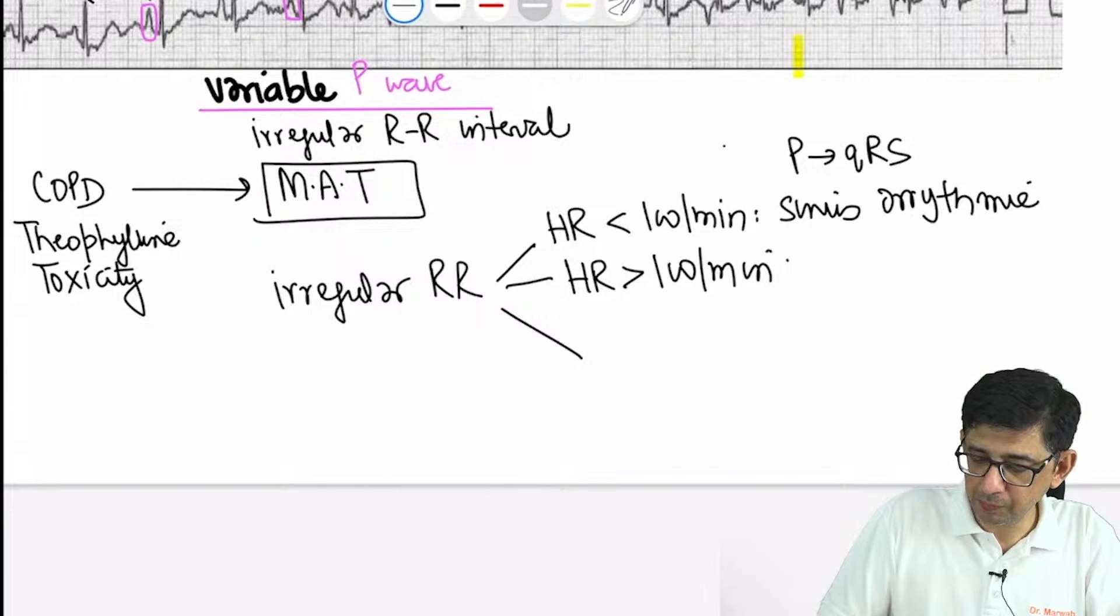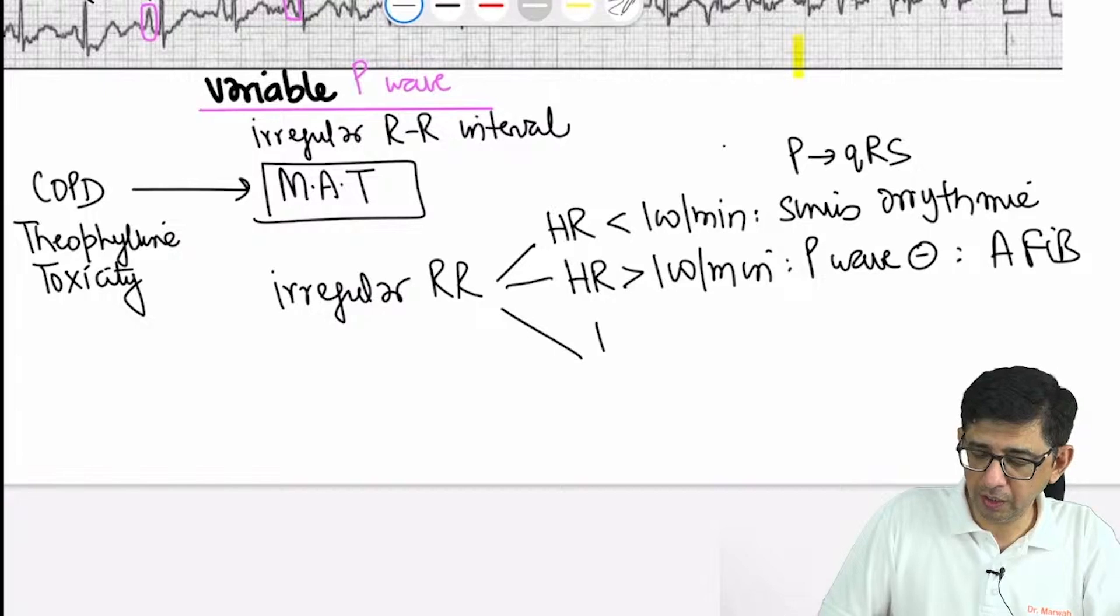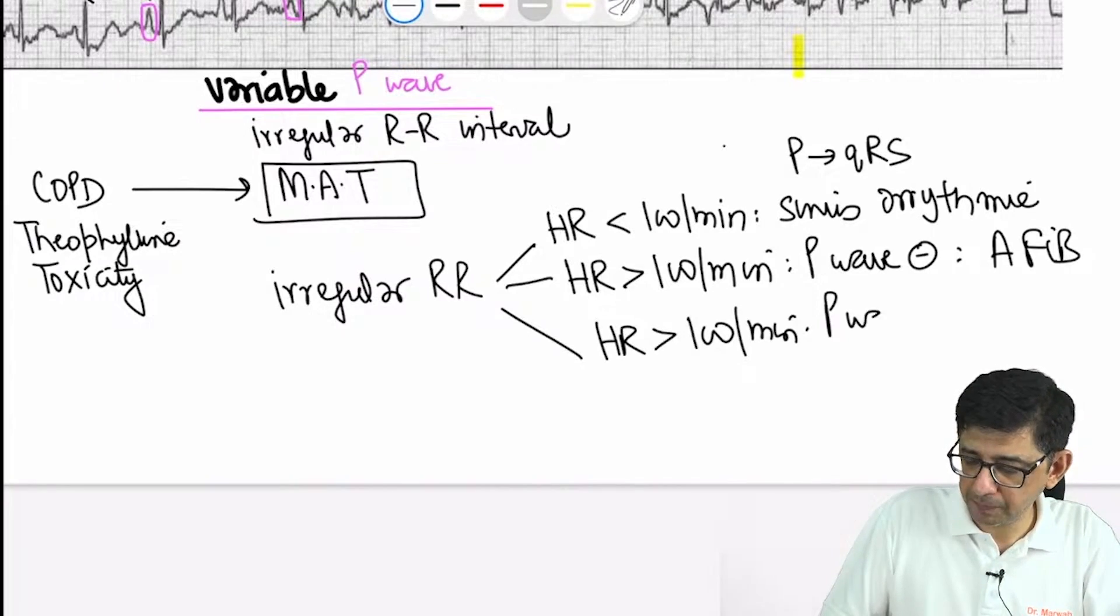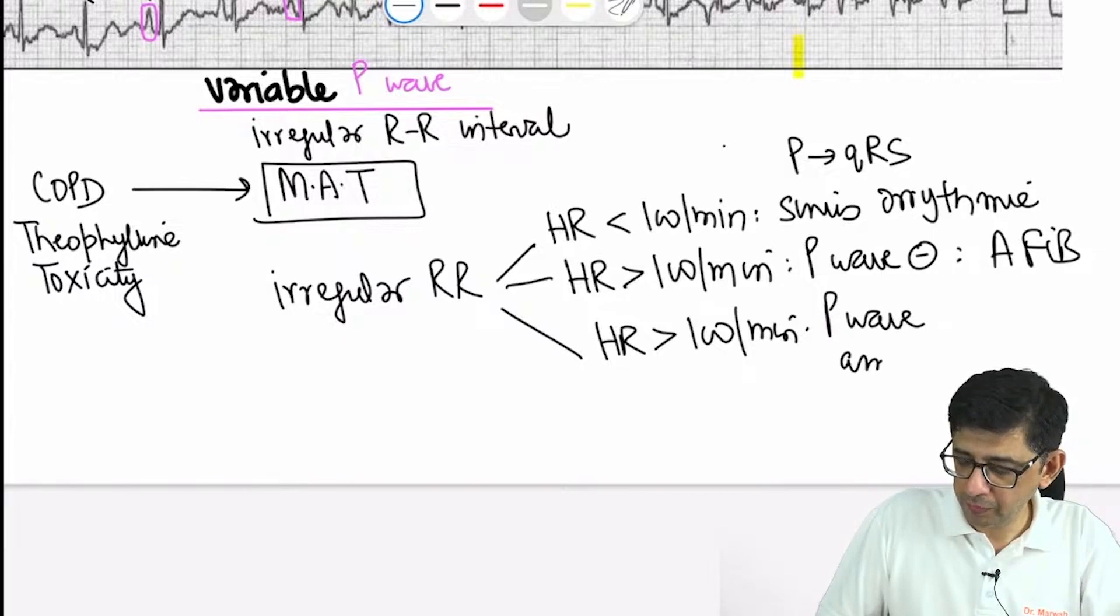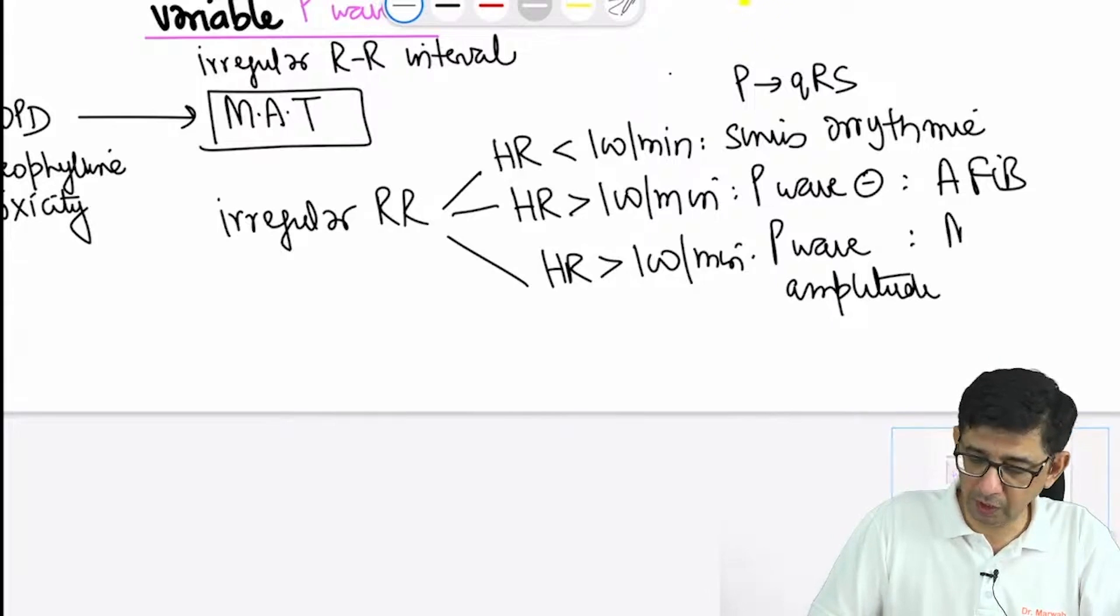If there's absence of P waves, you'll say it's atrial fibrillation. On the other hand, if heart rate is more than 100, there's variable RR interval, and P wave height is changing, P wave amplitude is variable.